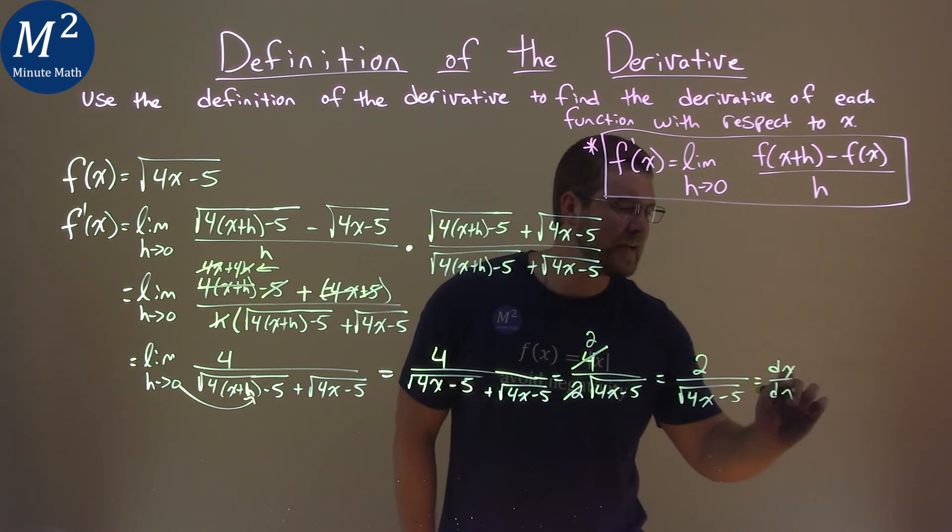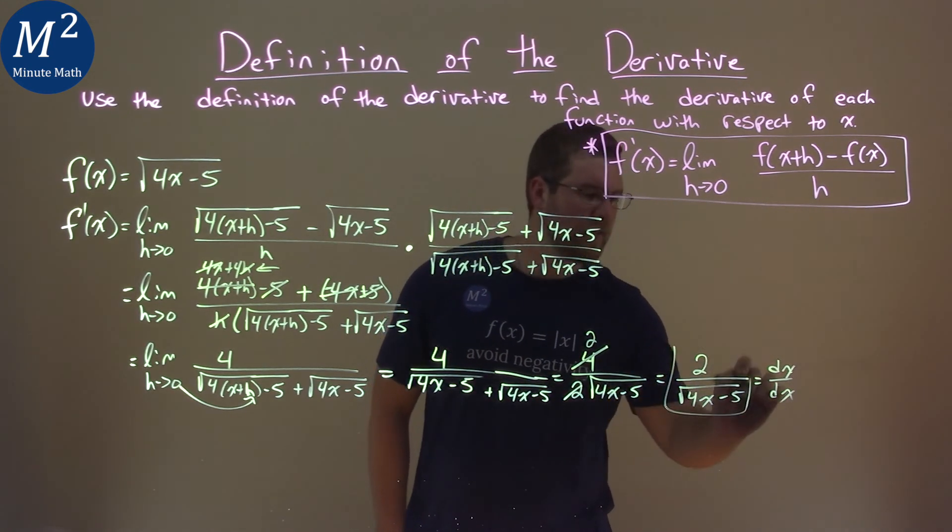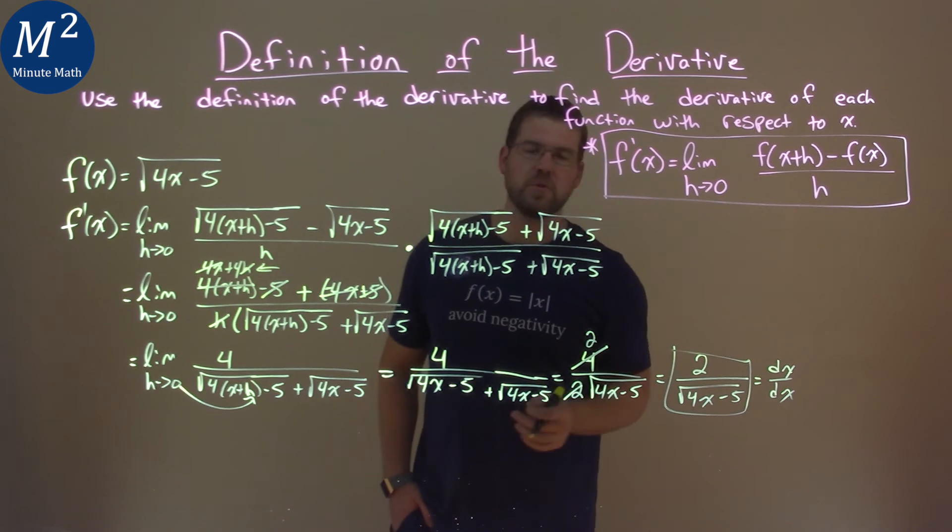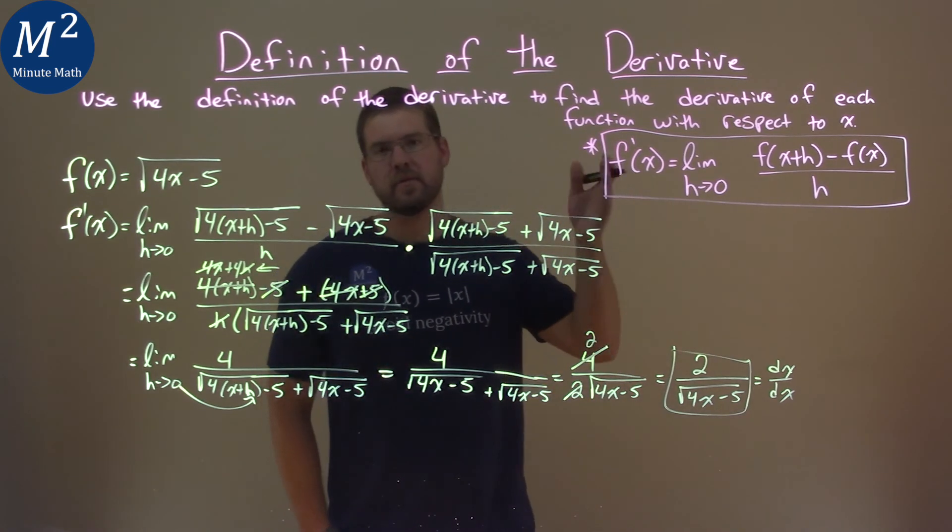Our dy/dx, f'(x), y', either way, our final answer is 2 over square root of 4x minus 5.